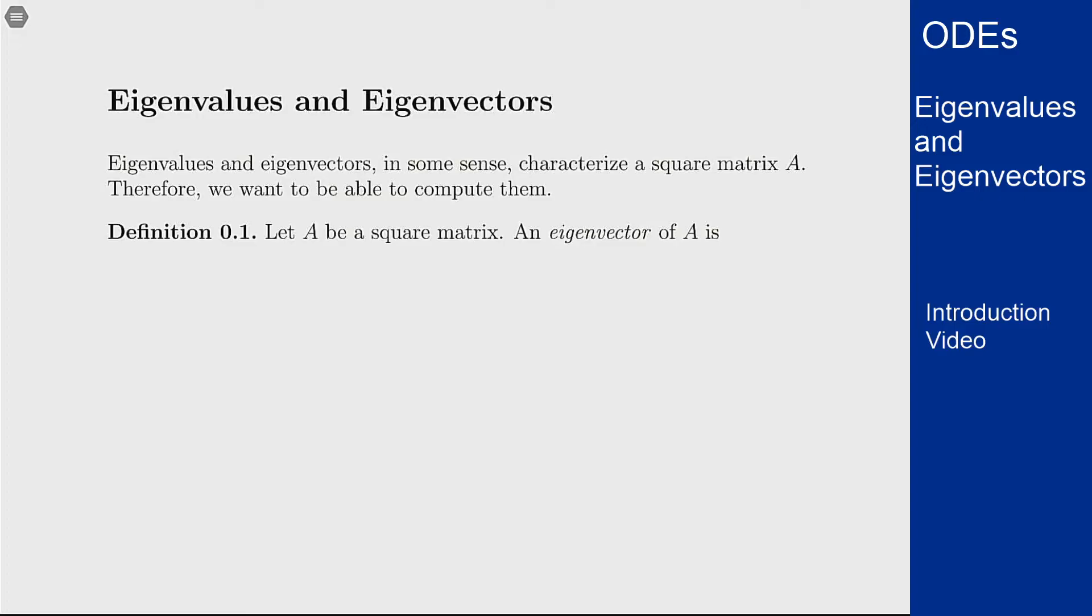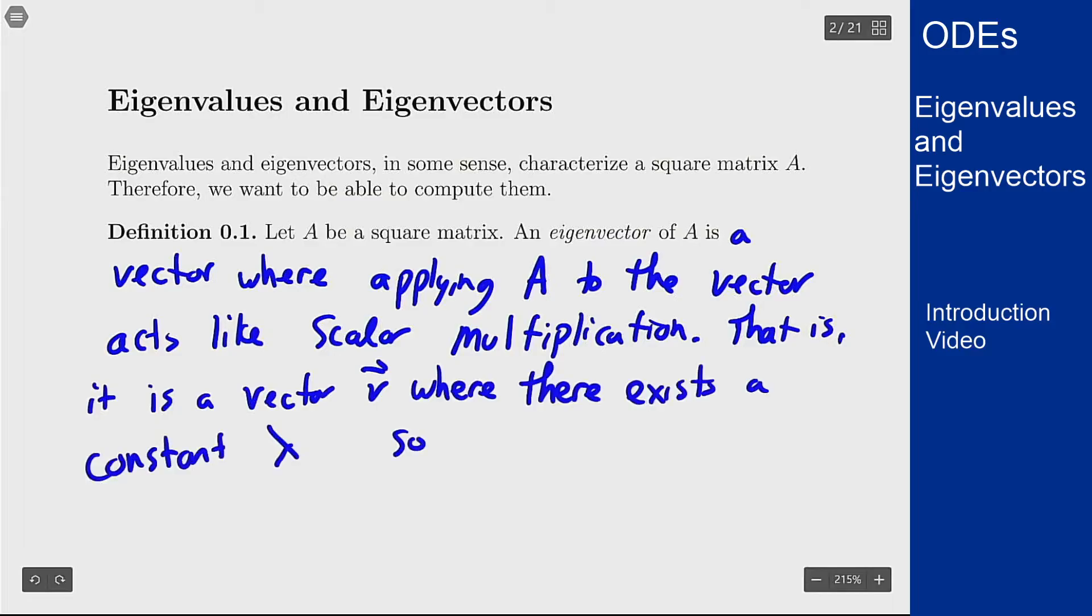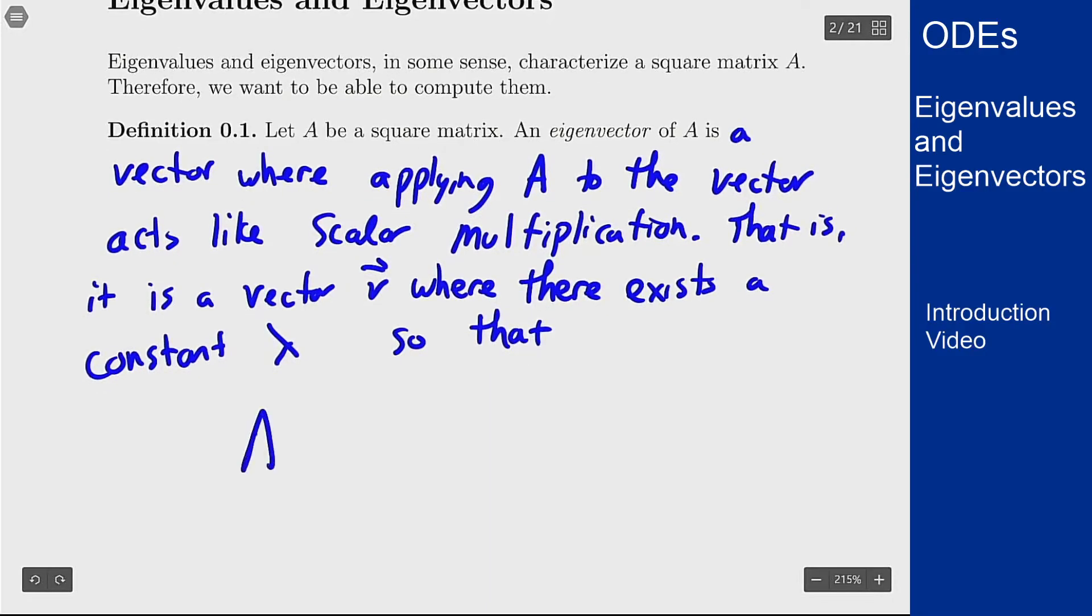So if I have a square matrix A, an eigenvector of A is a direction or a vector in which the matrix acts like scalar multiplication. That is, it is a vector v where there exists a constant lambda so that A times v equals lambda times v. Applying the matrix to v is the same as multiplying v by the constant lambda.